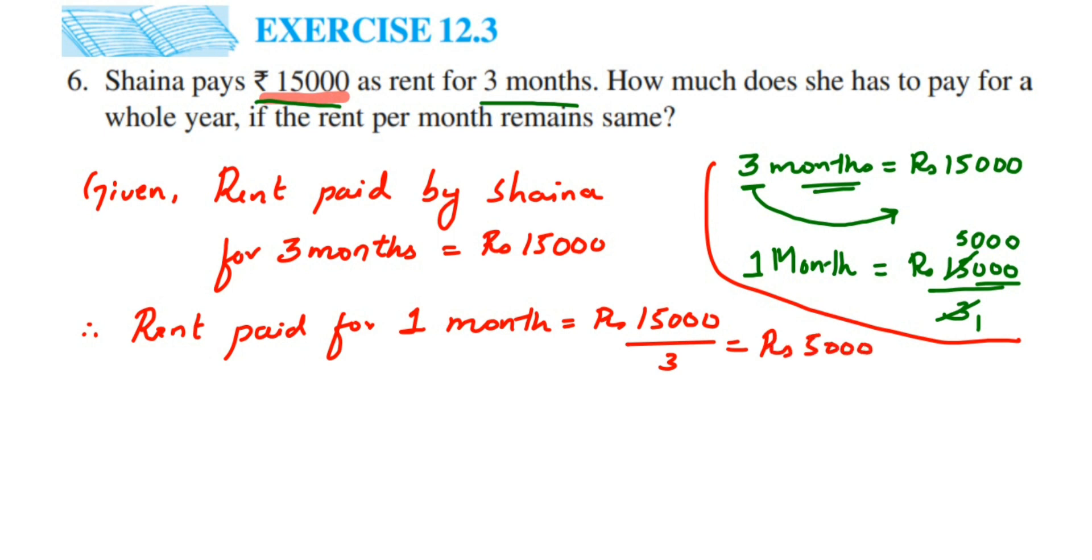So she's paying 5,000 rupees as rent for each month. Now we have to find out for whole year, which means 12 months. Therefore, rent paid for 12 months will be equal to 12 multiplied by 5,000.